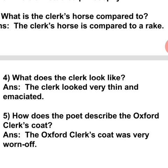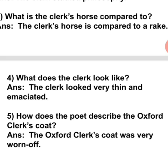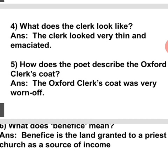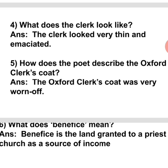Next question: How does the poet describe the Oxford Clerk's coat? The Oxford Clerk's coat was very worn off. Worn off means to lose color and freshness. The Oxford Clerk is a poor man, so he doesn't buy any new clothes.